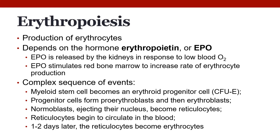A myeloid stem cell first becomes an erythroid progenitor known as a CFU-E. CFU stands for colony forming unit — if you spilled your blood cells onto a petri dish with the right growth media, you'd end up with a colony of erythrocyte-forming cells here, a colony of myeloid cells there, and a colony of lymphocyte cells there. Each cell that forms one of those colonies is a colony forming unit.